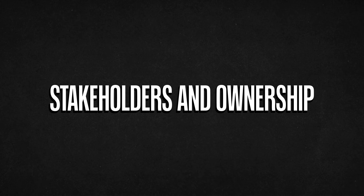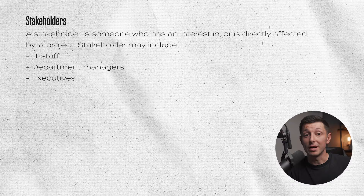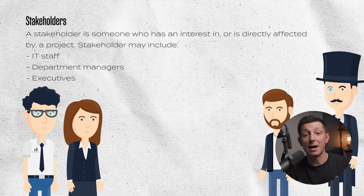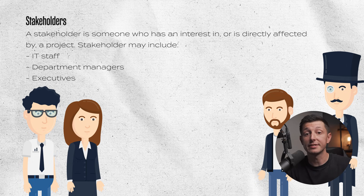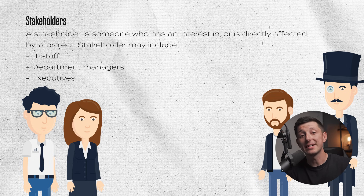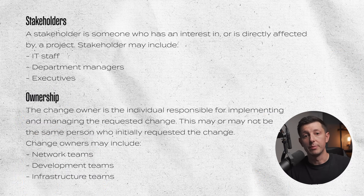Let's dive into stakeholders in more detail. When you want to make a change, one of the first things you should do is identify the stakeholders — someone who has an interest in or is directly affected by your project. In change management, stakeholders may include IT staff, department managers, and executives directly impacted by system changes. For example, when deploying a new CRM system, the sales and marketing teams are key stakeholders. By involving them early, you can get better insight into the potential impact.